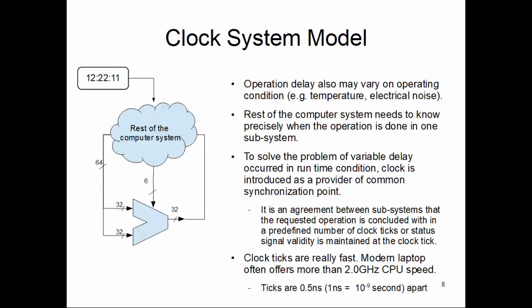If you go back to the previous slide, we talked about CPU speed and clock speed. We said that clock ticks are really fast and modern laptops offer more than 2 gigahertz CPU speed. This means the central processing unit is operating on a clock system which produces a 2 gigahertz clock signal, meaning the time period of the clock signal is 0.5 nanoseconds.